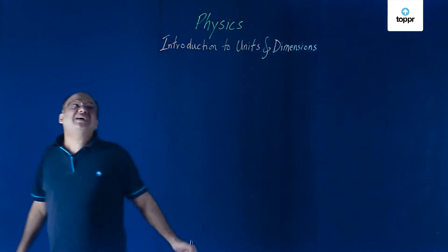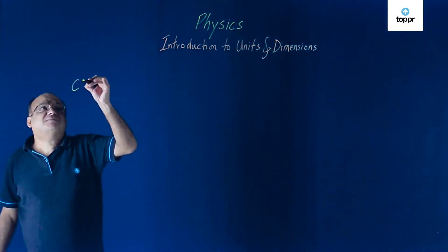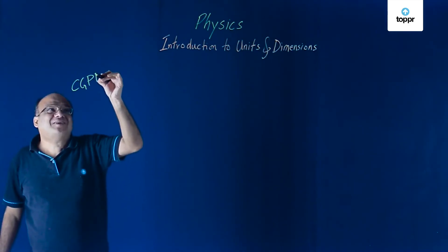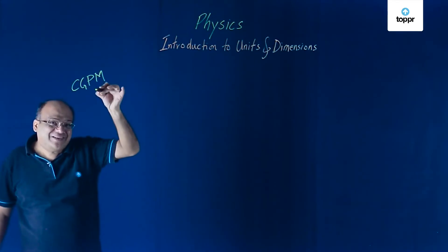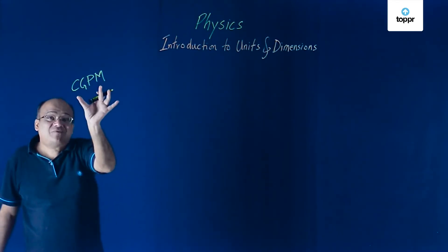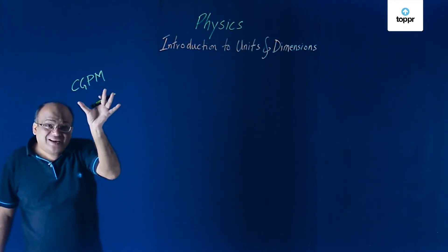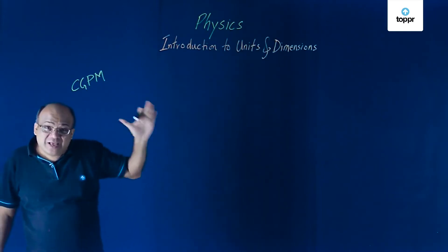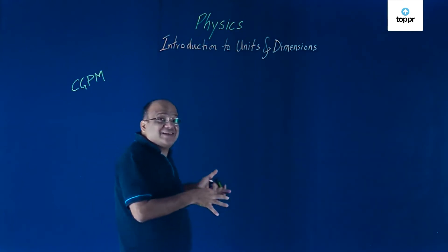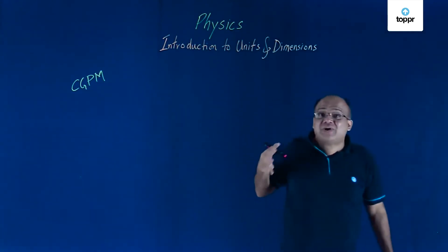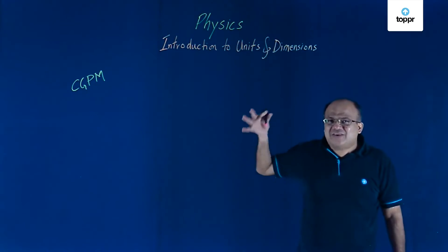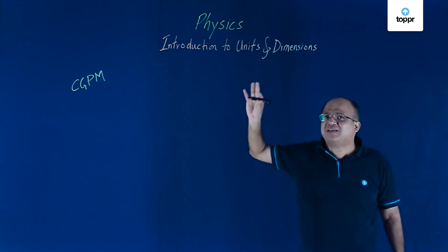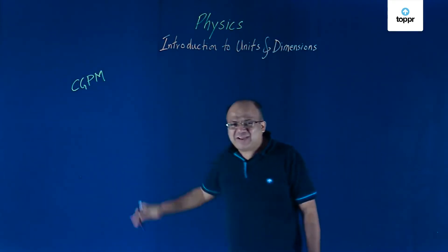There is a body called CGPM, General Conference of Weights and Measures. I am not written it wrong here. This is the short form in French and that's how it is identified as CGPM but in English it is General Conference of Weights and Measures. They will decide what units we can use and what is the definition of each of those units.